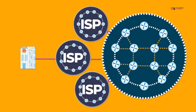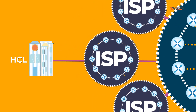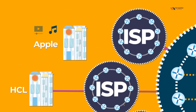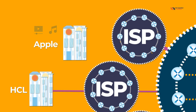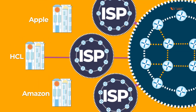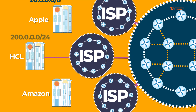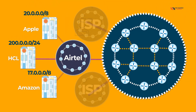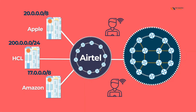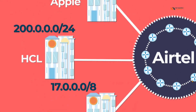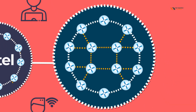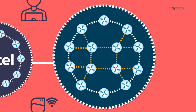Suppose you work for HCL, or take the example of Apple — they have public websites like iTunes where you can play music and watch TV. Or take Amazon — these are big companies with their own public IPs. Home users sitting here can access amazon.com or apple.com because on the internet there are big routers and big devices maintained by ISPs.